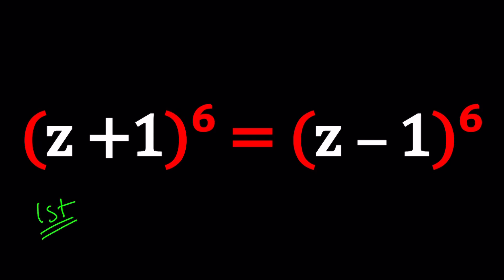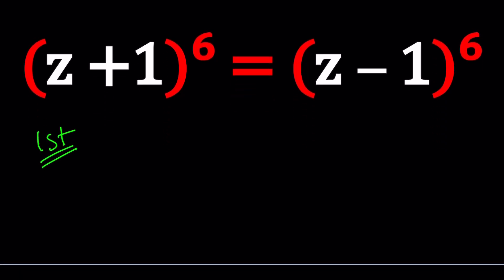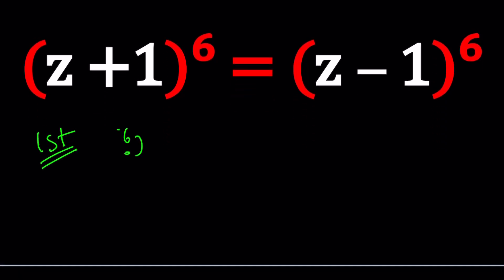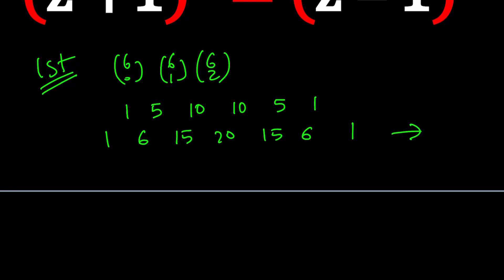So let's start with the first method. My first method is usually the most typical standard straightforward method which is using the binomial theorem. If you think about the binomial theorem it uses the binomial coefficients like six choose zero, six choose one, six choose two. In other words the Pascal's triangle and if you remember the fifth row it's one five ten ten five one. We're going to do some addition here and we'll get the next row in Pascal's triangle and it's going to look like this.